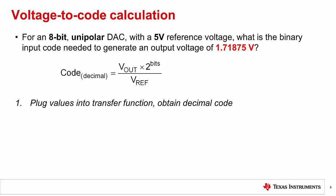Conversely, we can do a similar tactic to convert from voltage back to the input code. For an 8-bit unipolar DAC with a 5-volt reference voltage, what is the binary input code needed to generate an output voltage of 1.718 volts. To do this, let's consider the following equation, where the code in decimal is equal to the output voltage multiplied by the total number of bits divided by the reference. Entering these values into our equation, we can see that the input code should be about 88.